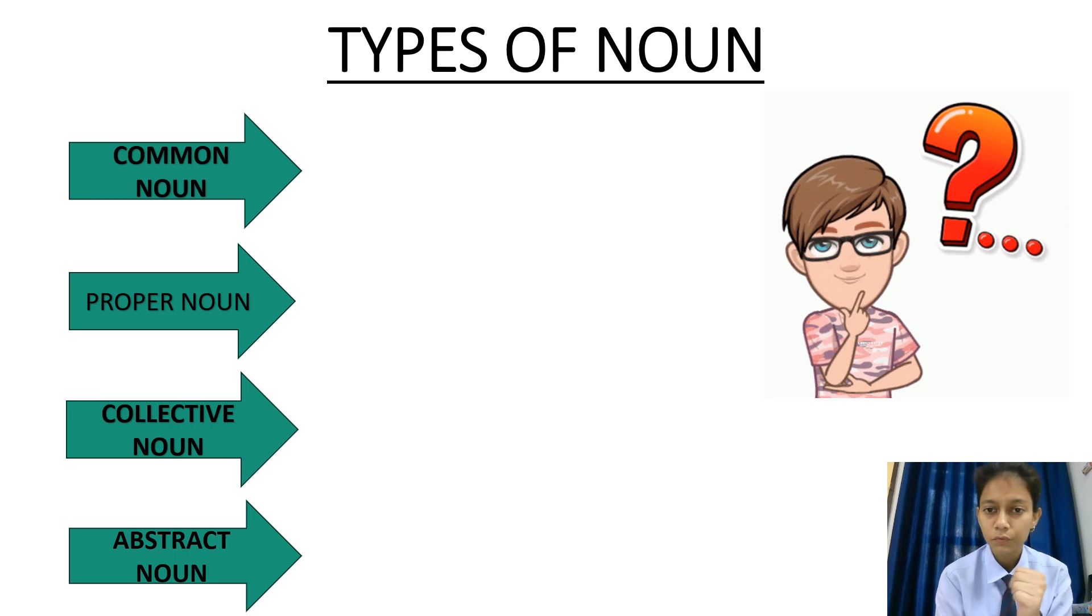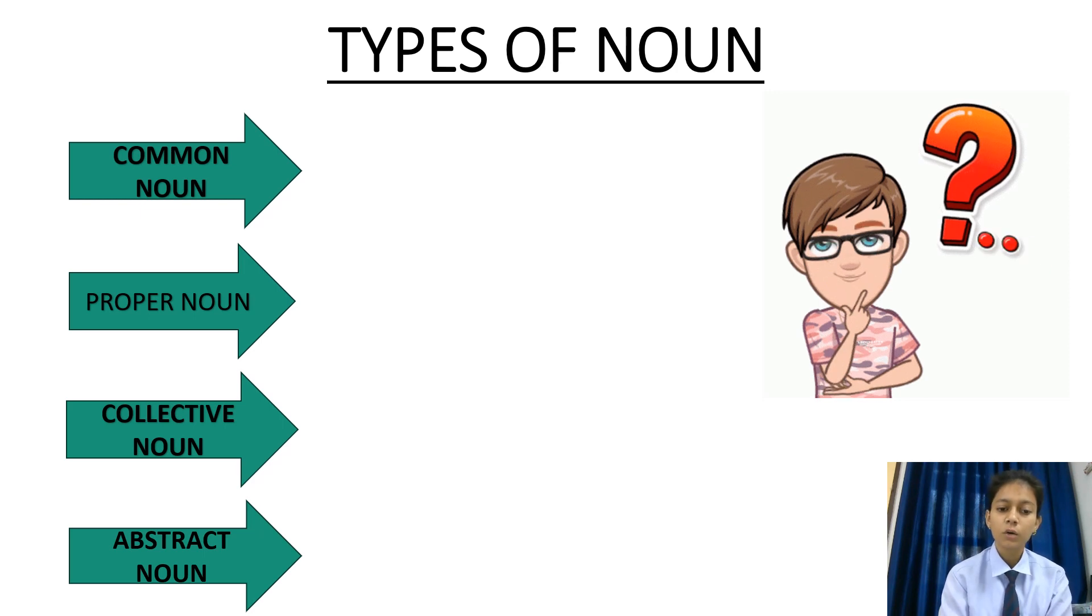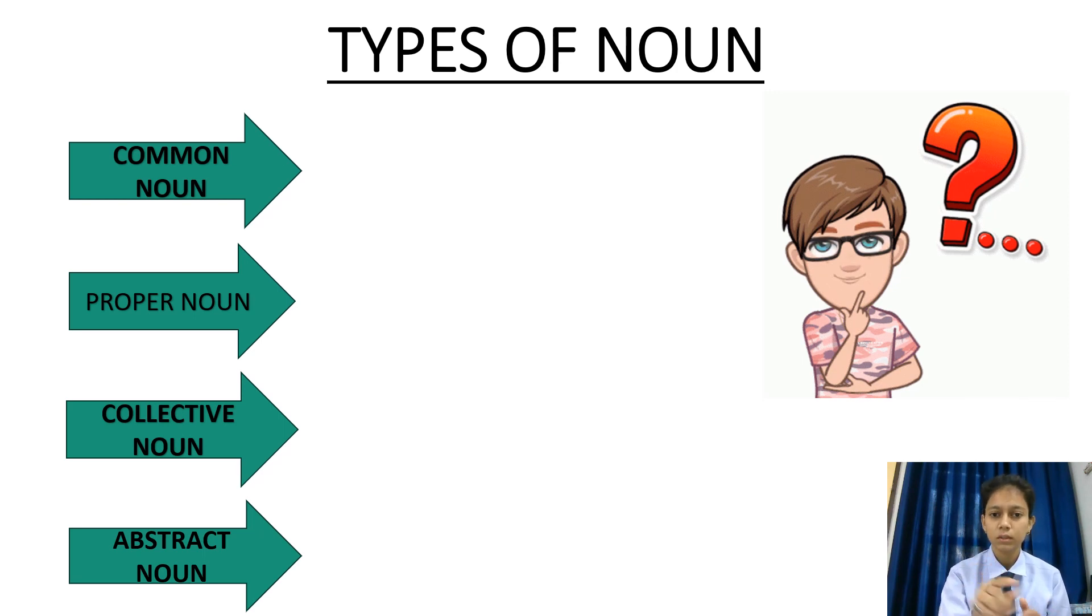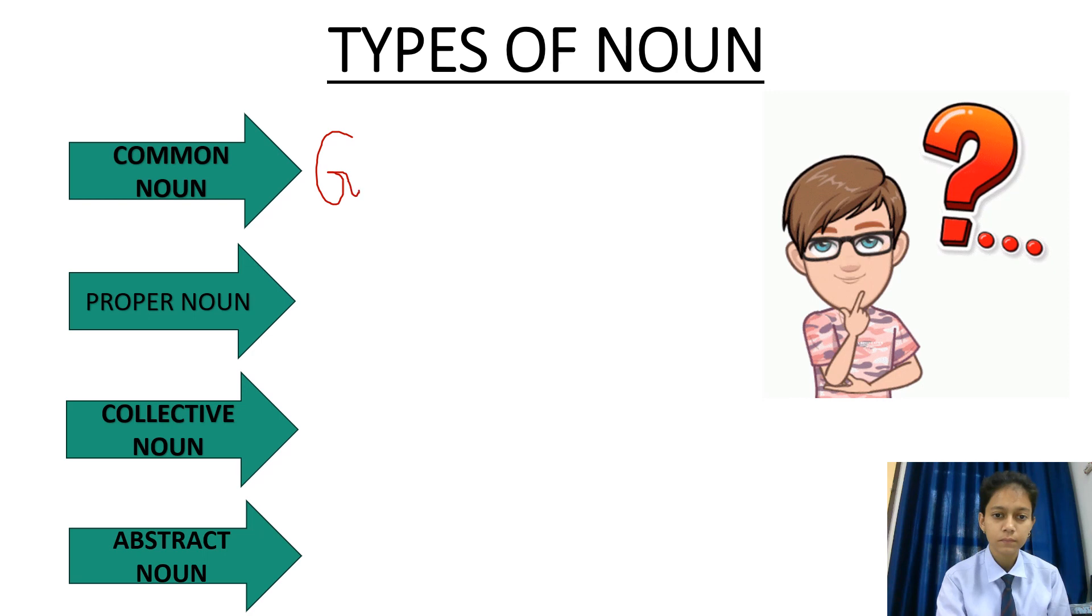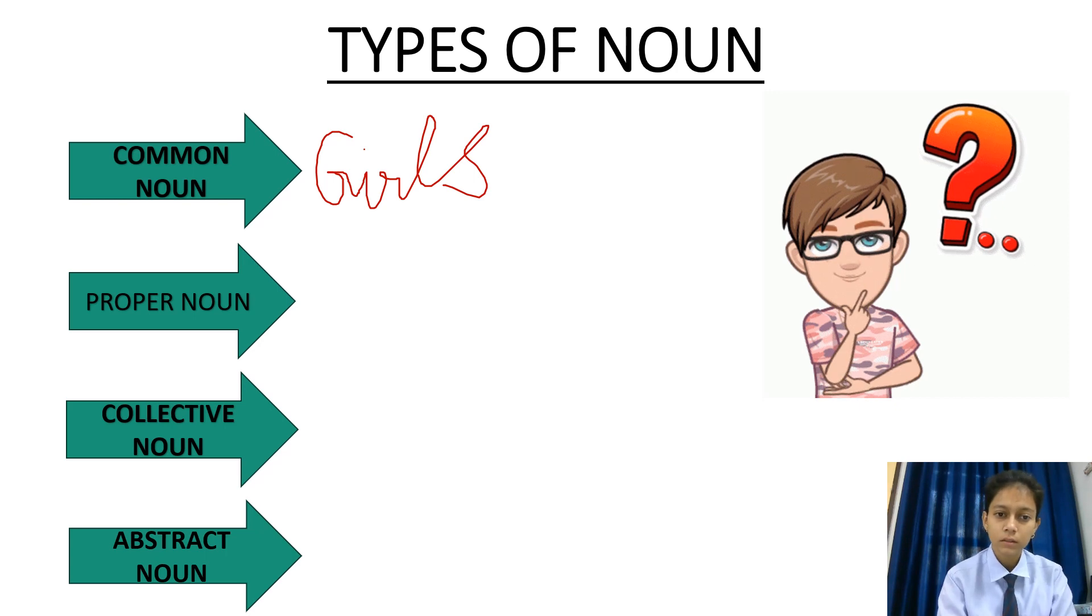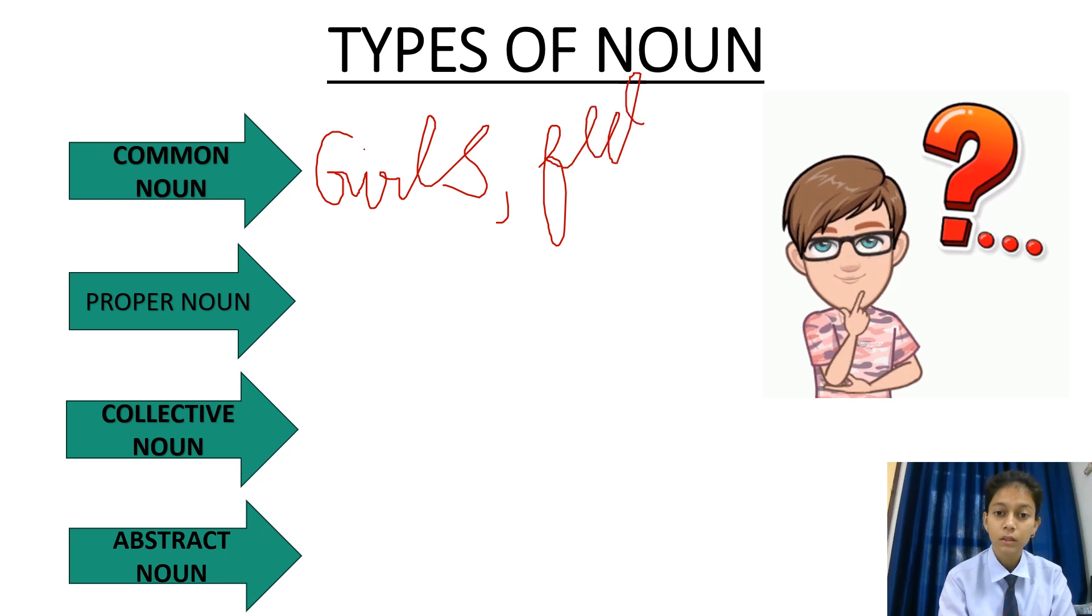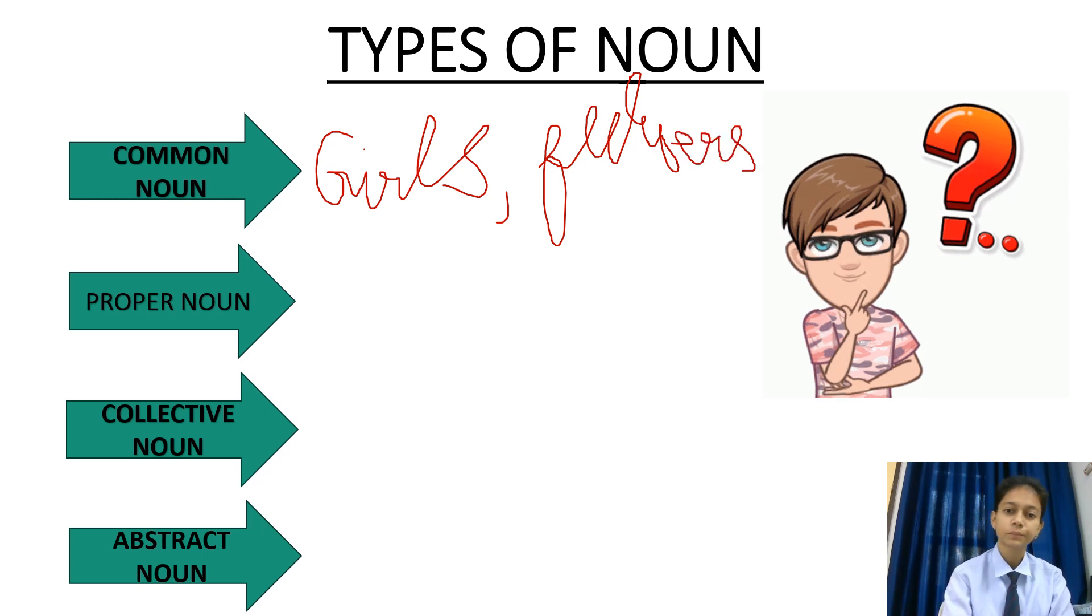There are four types of noun. First noun is common noun. Common noun is which is common in nature. I not specify the person. I am telling girls, so I not specify which girl. Example of a common noun is girls. And we are writing flower, so we are not giving which flower we are talking about. Flowers.